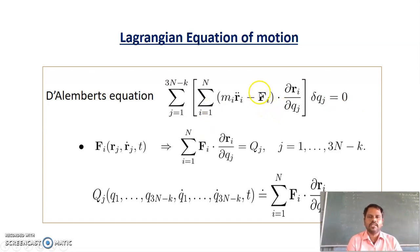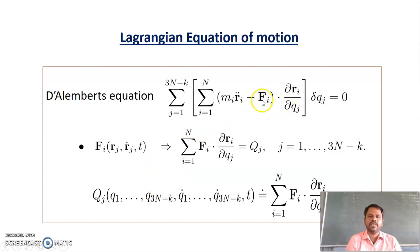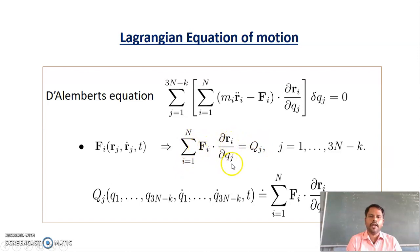The two terms are: F_i, the applied external force, and the reversed effective force. Now let's simplify term by term. Consider the second term given by F_i dot (∂R_i / ∂Q_J) into delta Q_J. Considering this to be Q_J, the Q_J term will be equal to summation from I equal to 1 to N of F_i times (∂R_i / ∂Q_J).